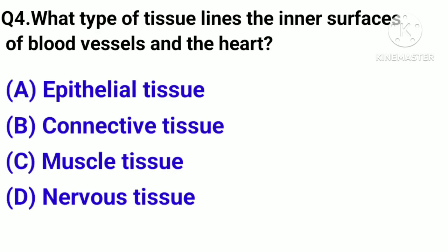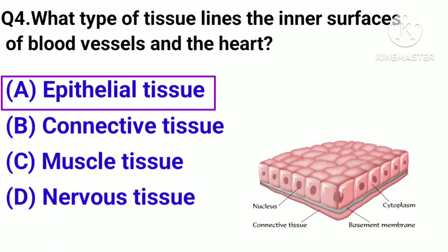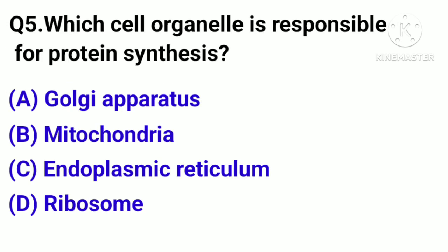Question number 4. What type of tissue lines the inner surfaces of blood vessels and the heart? Option A: Epithelial tissue. B: Connective tissue. C: Muscle tissue. D: Nervous tissue. Correct answer: Option A, Epithelial tissue.